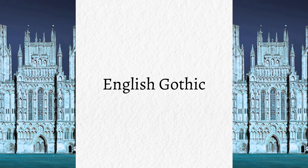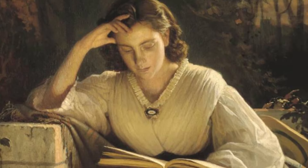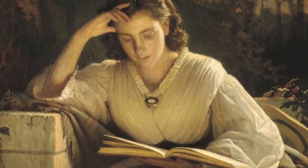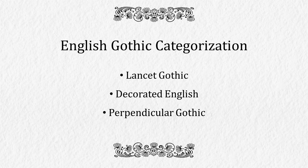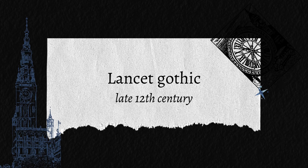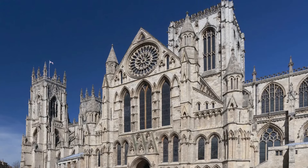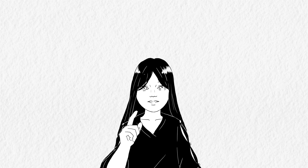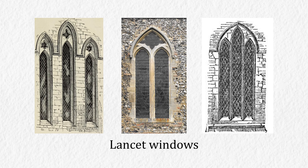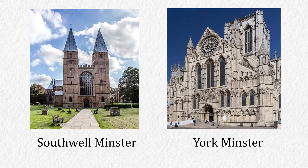Next is the categorisation of English Gothic architecture. People from the Gothic Revival era, later in the Victorian period, grouped the medieval English Gothic architecture into three parts: Early English, Decorated English, and Perpendicular Gothic. Early Gothic, known as Lancet Gothic, gained popularity in the late 12th century. They started to incorporate various Gothic elements such as pointed arches, elevated patterns, and flying buttresses. One key feature of the Early English is their Lancet windows — tall, simple, narrow pointed windows typically grouped into two or three. Examples of Early English Gothic are Southwell Minster and York Minster.